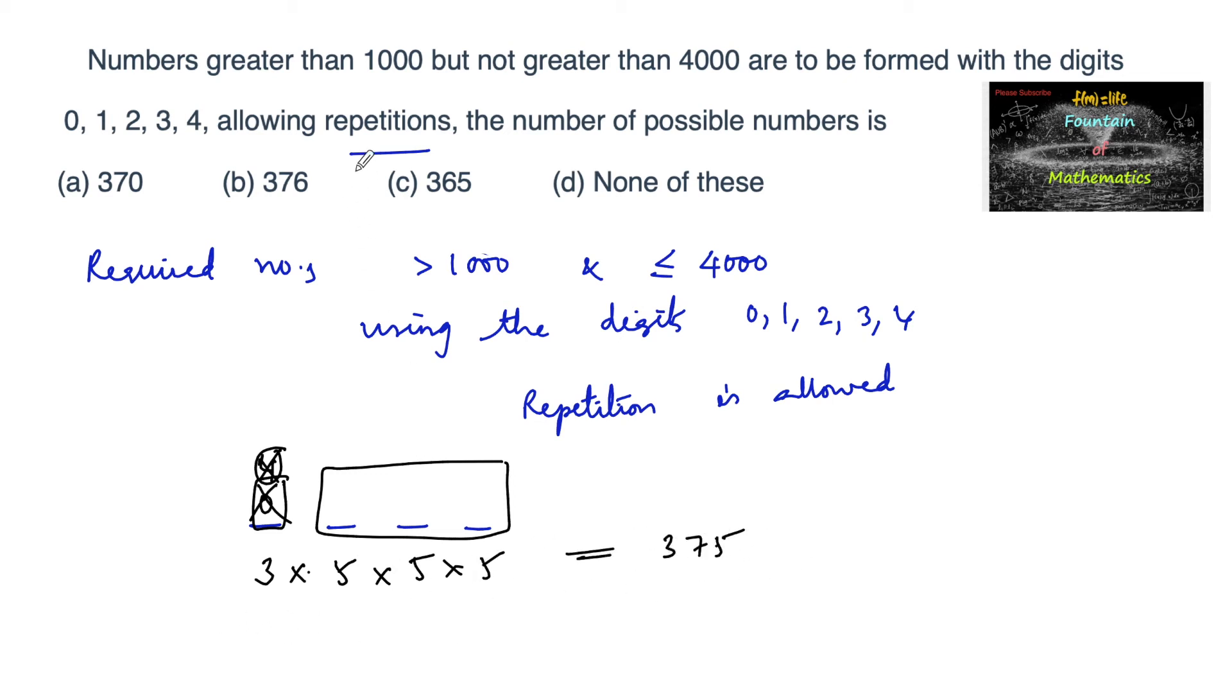And then again, one more number, which is 4000. Because once the first place is 4, the only possibility is 4000. So this can be written in one way: 375 plus 1.